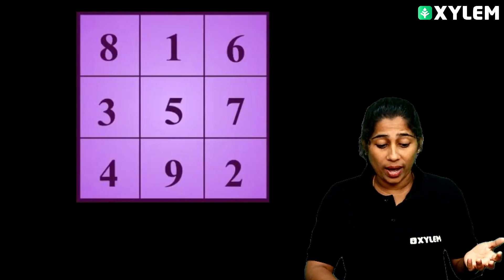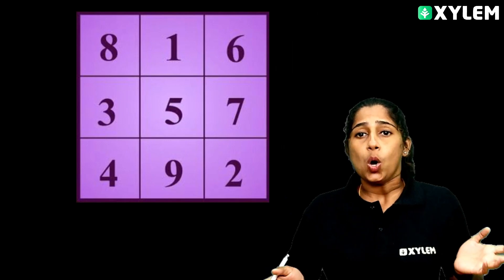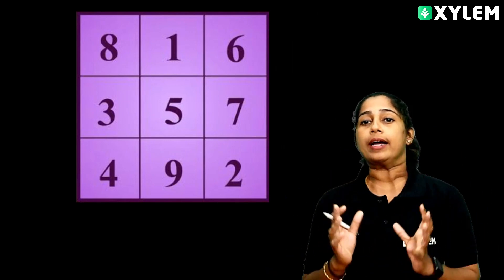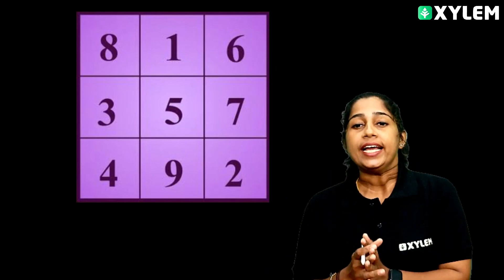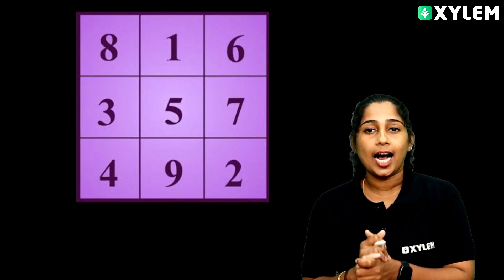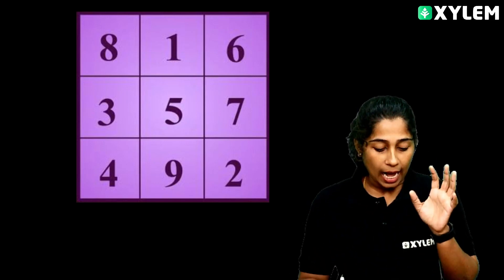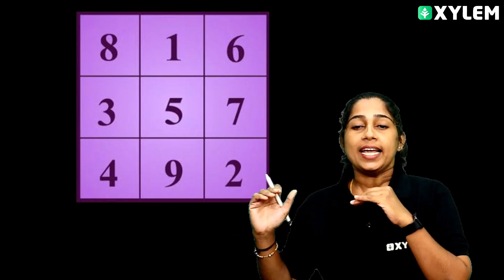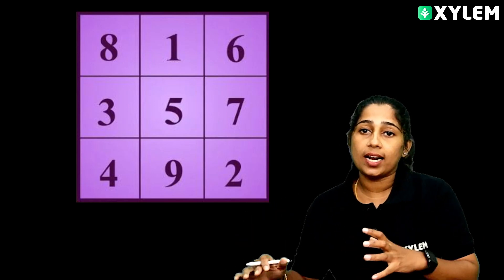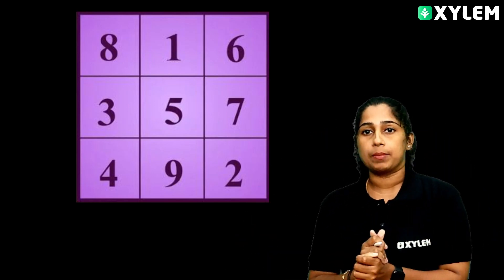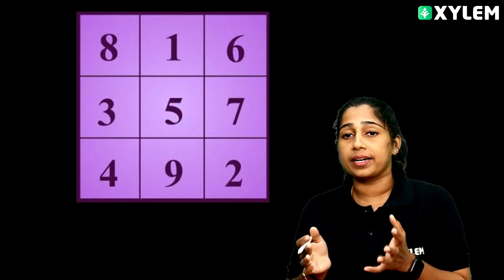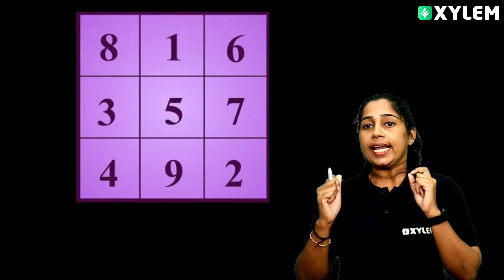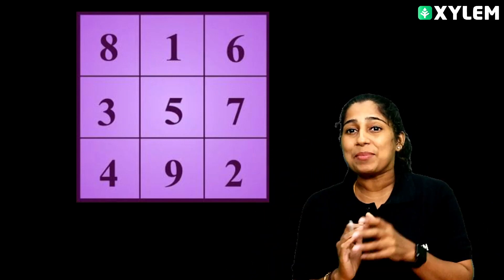So what is a magic square? A magic square is a square with numbers that have a special property. There are 9 numbers arranged row-wise and column-wise. What are these numbers?